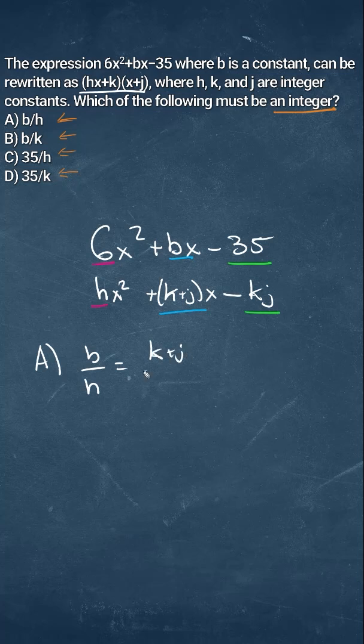So if A is going to be (k+j)/6, we don't know what k or j could be, so we can't really solve this answer.